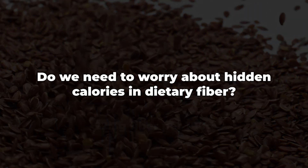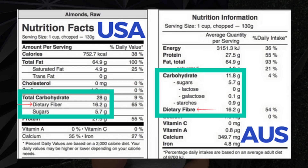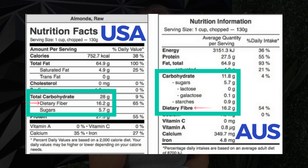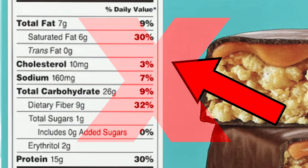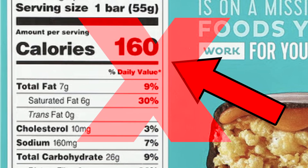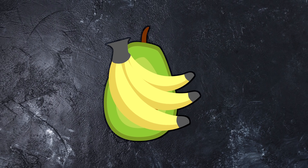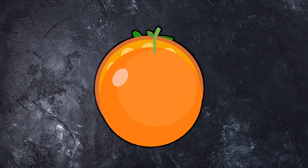Do we need to worry about these hidden calories in dietary fiber? Well, in the UK and Australia, the calories from soluble fiber are included on food labels and are listed separately from the available or digestible carbohydrates. Here in the US, however, food manufacturers can choose to include or exclude fiber entirely, potentially leading to inaccurate calorie counts on products high in fiber, particularly those with high soluble fiber.